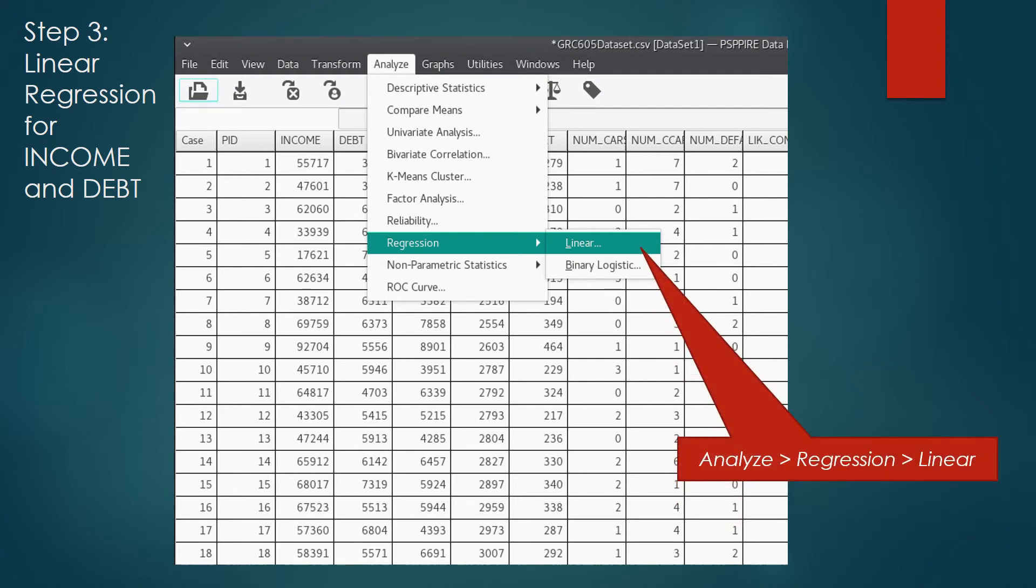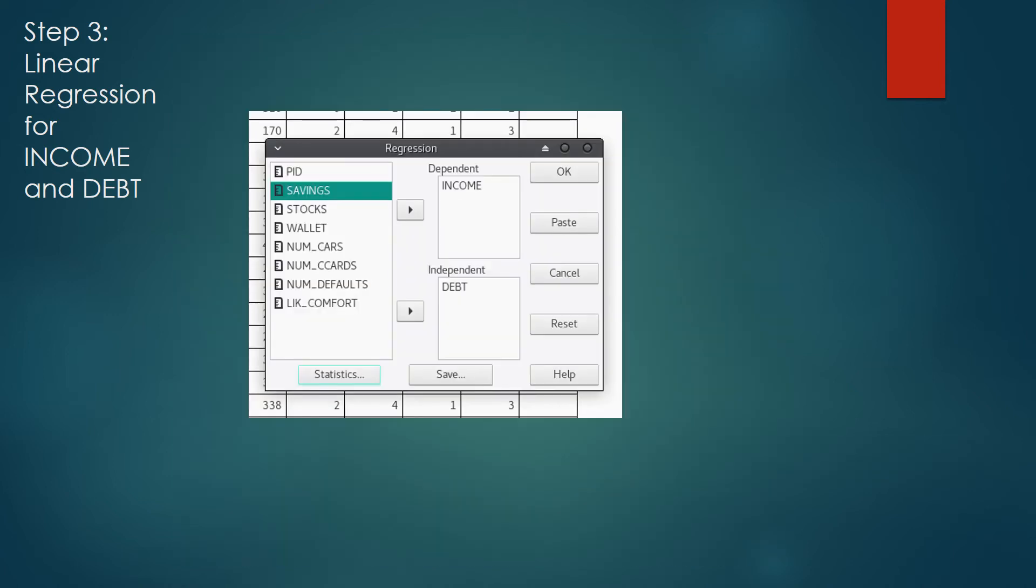After you click Linear, a dialog box will appear. The dialog box is going to ask you for some information. In particular, the dependent and independent variables.